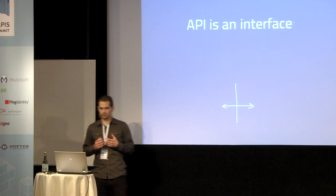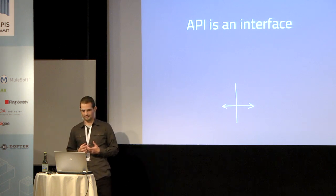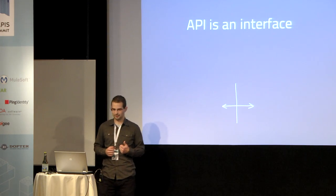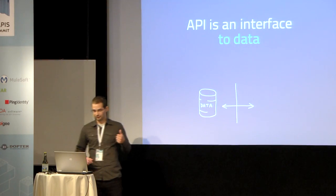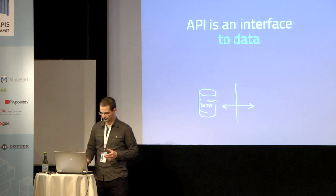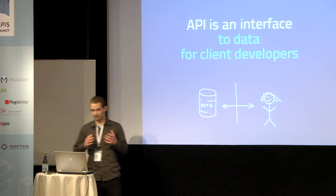I think the first thing we need to realize is we need to understand what an API is. People think that API is something like we build something for machines — programs and scripts and mobile applications that will use the API. But that's not really the case. API is an interface — that's quite obvious from the name. It's an interface to data for client developers.